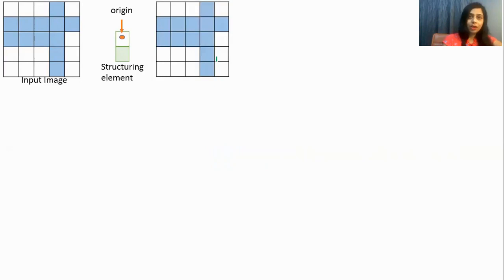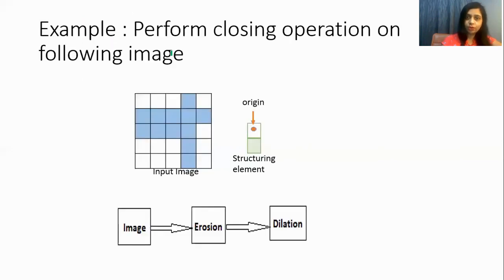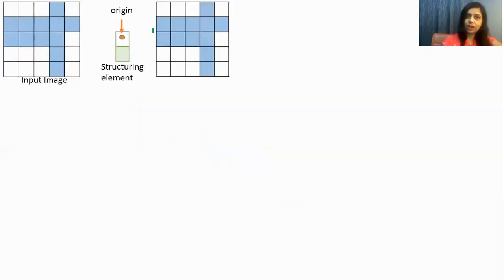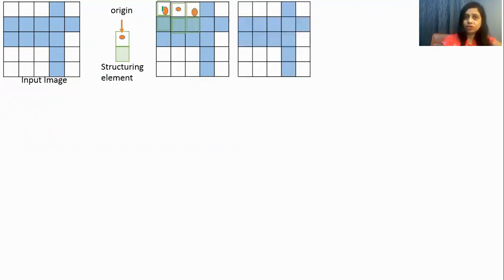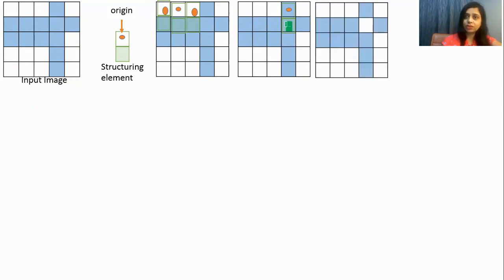First we will do the erosion operation. Erosion means whenever there is an overlapping we have to remove the pixel. Here there is no overlapping because no blue color is below this origin, so no change. Next position — no change. Next position — no change. Now at the next position there is overlapping between blue color and origin, so we have to remove this blue pixel from the image. Now at the next position, since there is white when we overlay it, there is no overlapping and hence this pixel will not change.